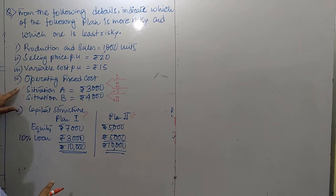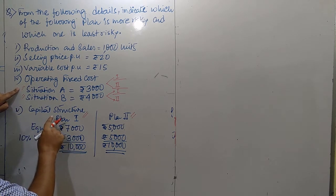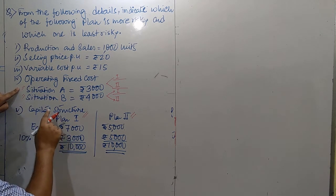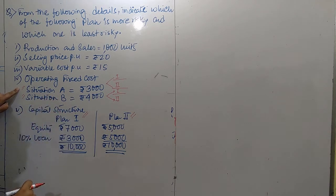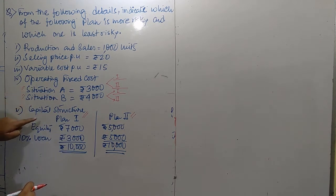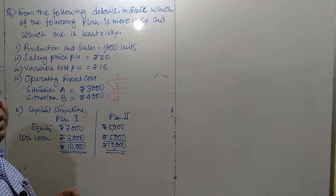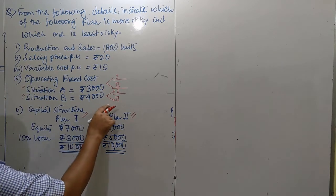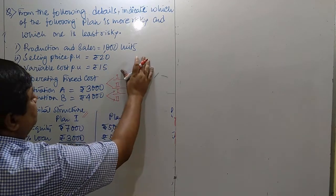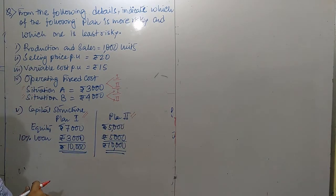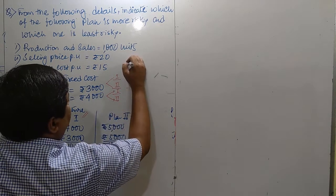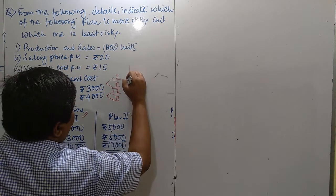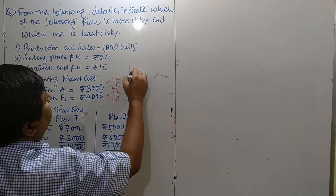Sometimes students are confused about whether it is situation A under a plan, or plan A under a situation. The basic thing is that the criteria should be based on fixed cost — the first classification should be fixed cost. If fixed cost is available in respect of plan, then it should be situation under plan. If fixed cost is available in case of situation, then it is plan under situation. Let me chalk out the formula once again: DOL.